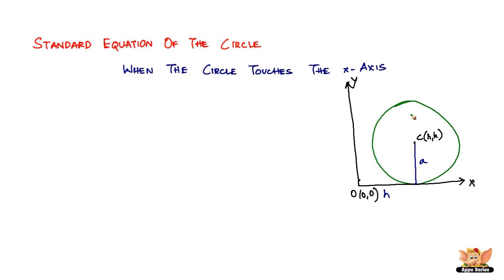Alright, here we are. This is what happens when the circle touches the x-axis. What happens is that the center is of the coordinate h, k. We have h here and k is supposed to be this,